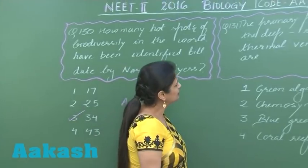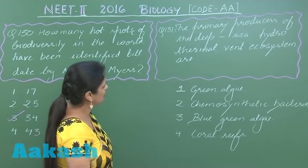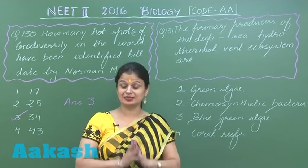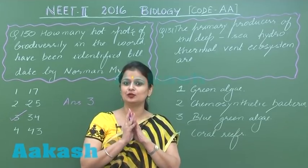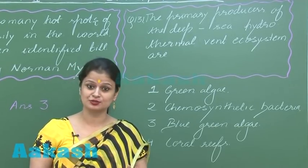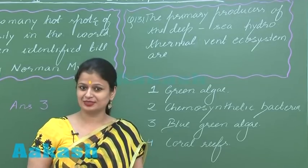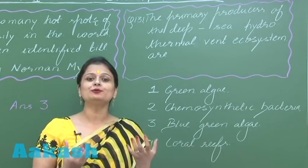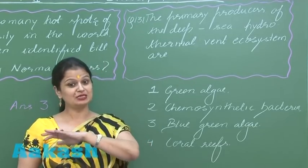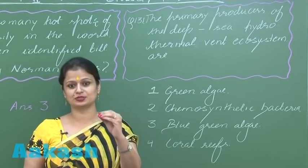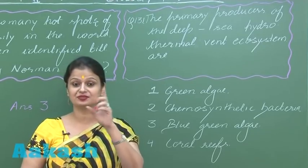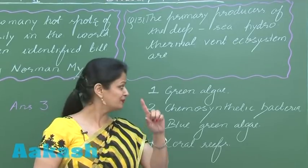Question number 131: the primary producers of deep sea hydrothermal vents. The deep sea hydrothermal vent is an area where light cannot penetrate. So if light cannot penetrate, there is no chance of photoautotrophs — no photosynthetic organism would be present. The source of energy there is chemical energy.